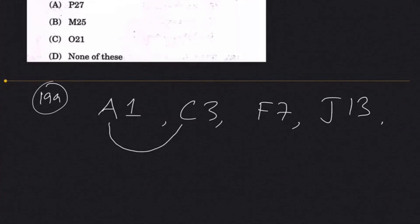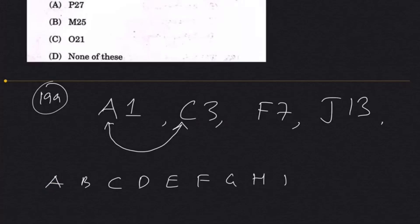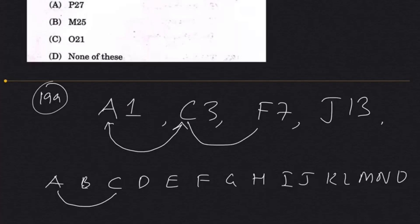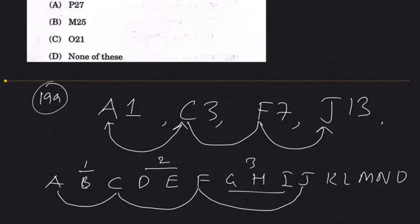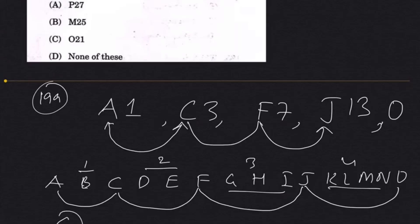From A to C is a skip of 2 letters (A, B, C). From C to F is a skip of 3 letters (C, D, E, F). From F to J is a skip of 4 letters (F, G, H, I, J). So in the next step the skip should be 5 letters from J: J, K, L, M, N, O. So the next letter is O.